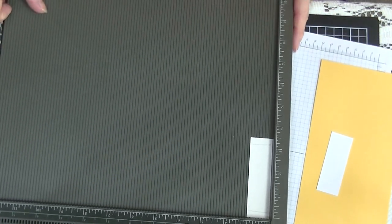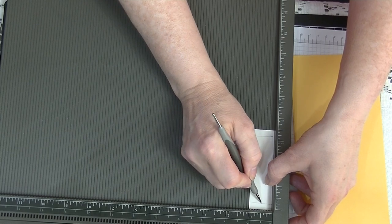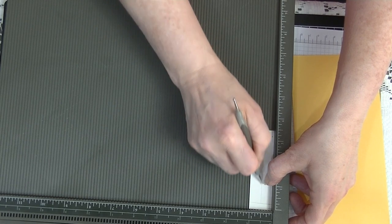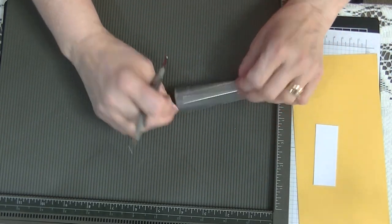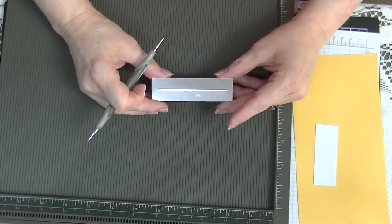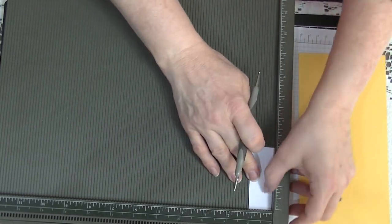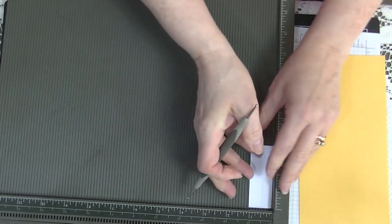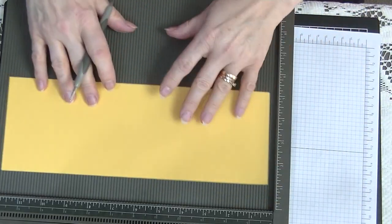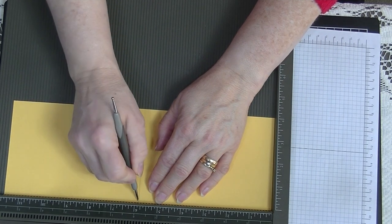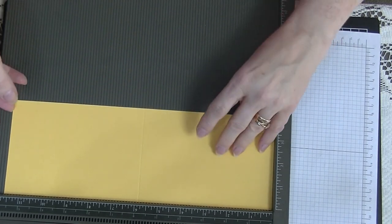We're going to pop this into the scoreboard on the short side and score this from that score line down to the other score line at the half inch mark. This piece we're going to score on the half inch mark as well. Then we're going to pop our main card in on the long side, and we're going to score this at five and seven eighths, which is the one marked just below the six on the scoreboard. That's all the scoring we're going to do.